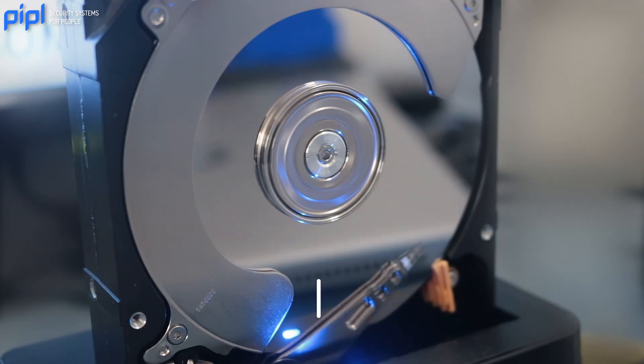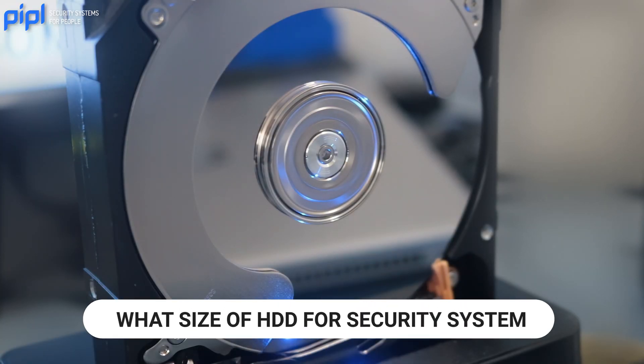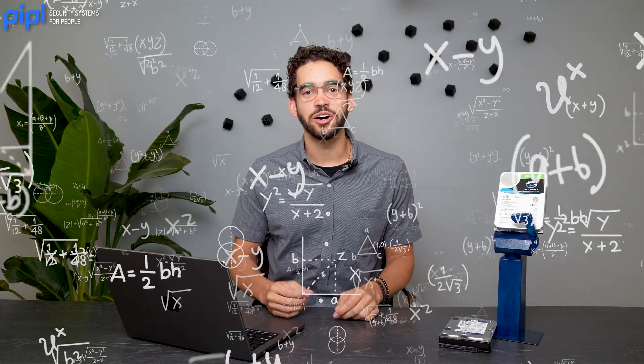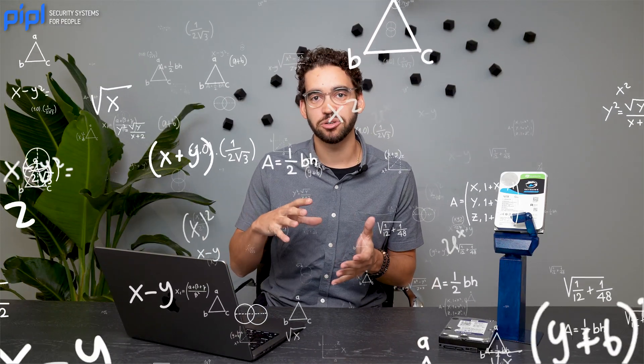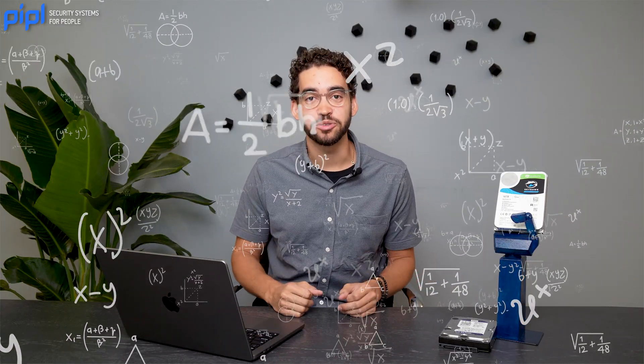Today we're answering questions from the community, and one popular question we received was about hard drives: what size of hard drive should I get to store the information for my security surveillance system? This has a lot of factors to it. Today we will see all the factors you need to understand to choose the right size of storage for your solution. We will show the formula for what actually happens on the storage unit when you record from your video surveillance, and we will show the tools you can use to calculate the storage size you need for your projects. Let's get right into it.